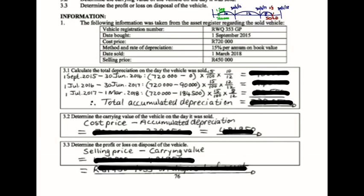The first period is the 10 months within the first year. I bought it for R720,000 — it's the first year, so there's no accumulated depreciation yet. 15% for 10 of the 12 months tells me I've lost a total of R90,000 value in that first year. Remember, this is the diminishing balance method, also called the carrying value method. So in my second year, I started with R720,000, but in the first year it already lost R90,000 in value. Decreased by R90,000, times 15%, for a full 12 out of 12 months — so in the second year it lost R94,500.